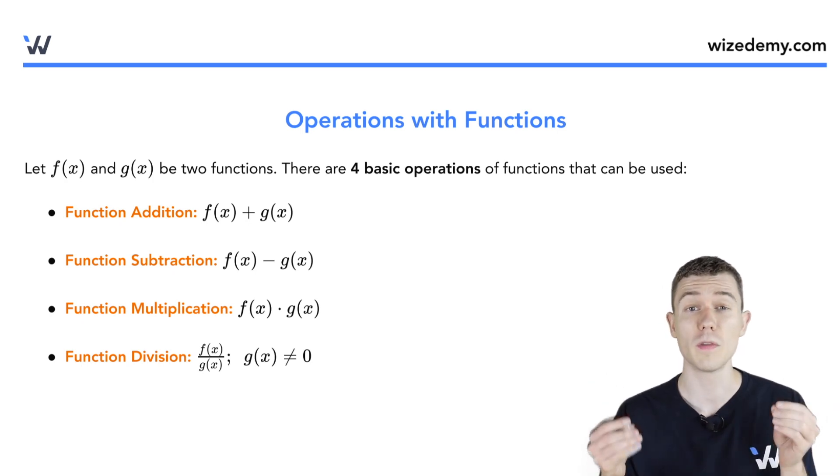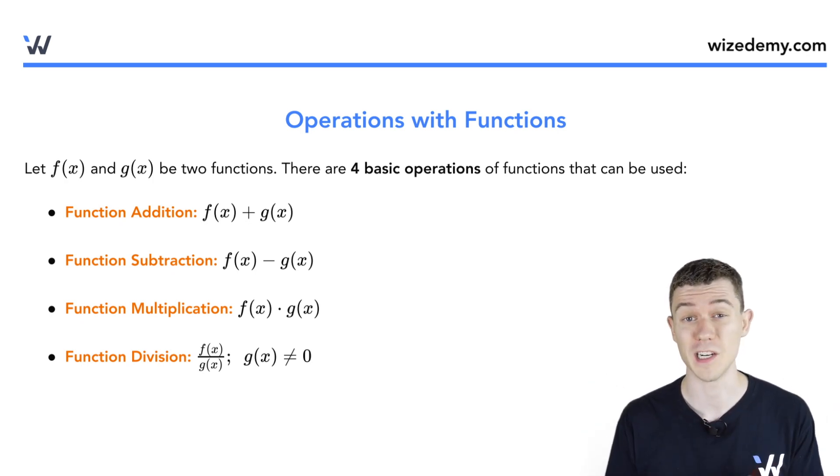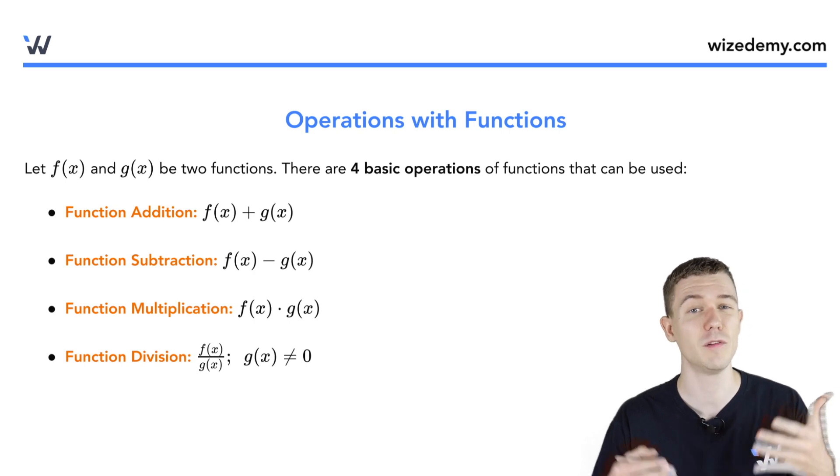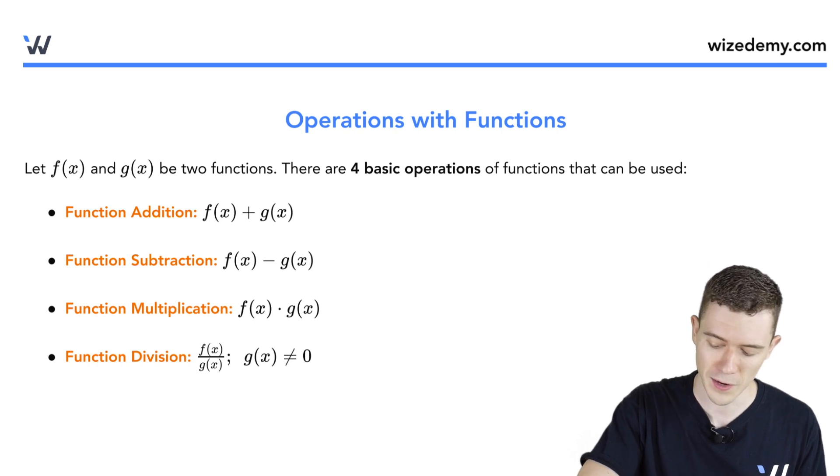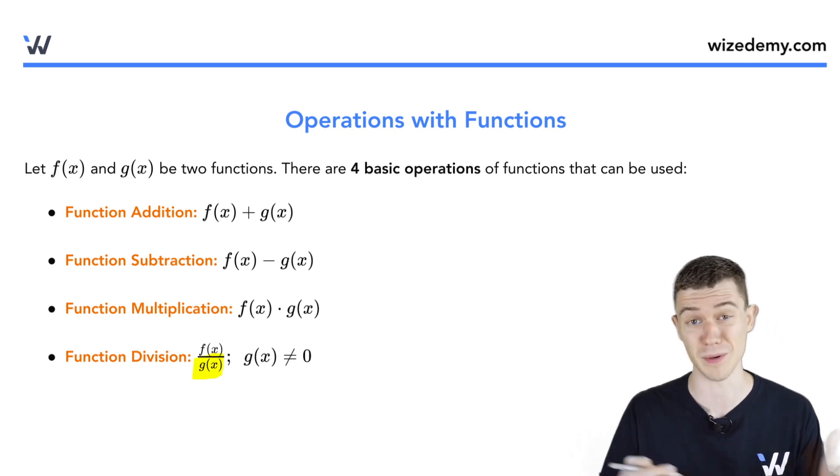Just like with numbers, we can perform the four basic arithmetic operations on functions. Namely, we can add functions, subtract functions, multiply them, and divide them, provided of course we're not dividing by zero.